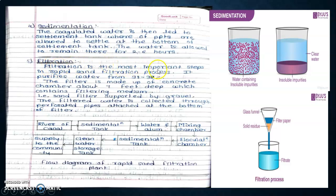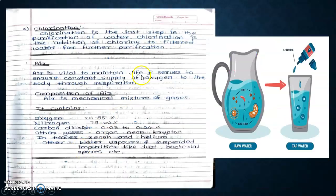Filtration is the most important step in rapid sand filtration process. It purifies 98 to 99% of water. The filter is made up of concrete chamber about 7 feet deep which contains filtration medium, that is sand filter supported by gravels. The filtered water is collected through perforated pipes attached at the bottom of the filter.